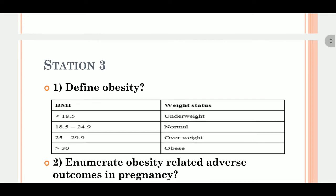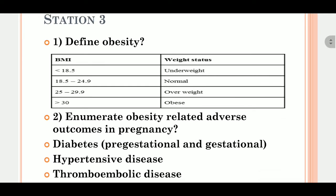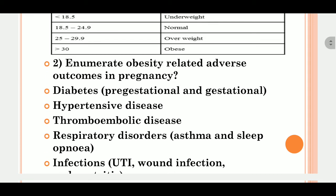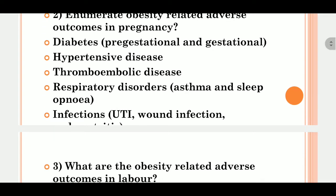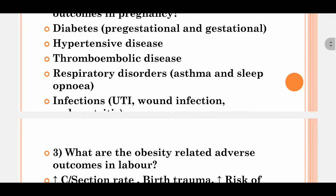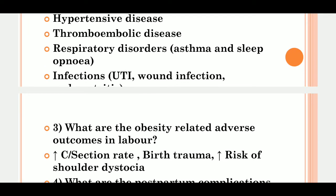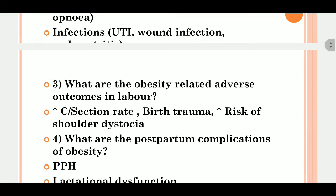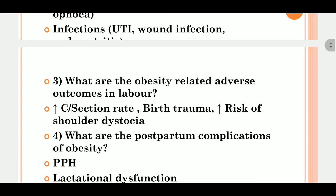The examiner may ask: enumerate obesity-related adverse outcomes in pregnancy. These include diabetes, hypertensive disorders, thromboembolism, respiratory disorders, and infection. Obesity-related adverse outcomes in labor include increased risk of cesarean section, birth trauma, and increased risk of shoulder dystocia.